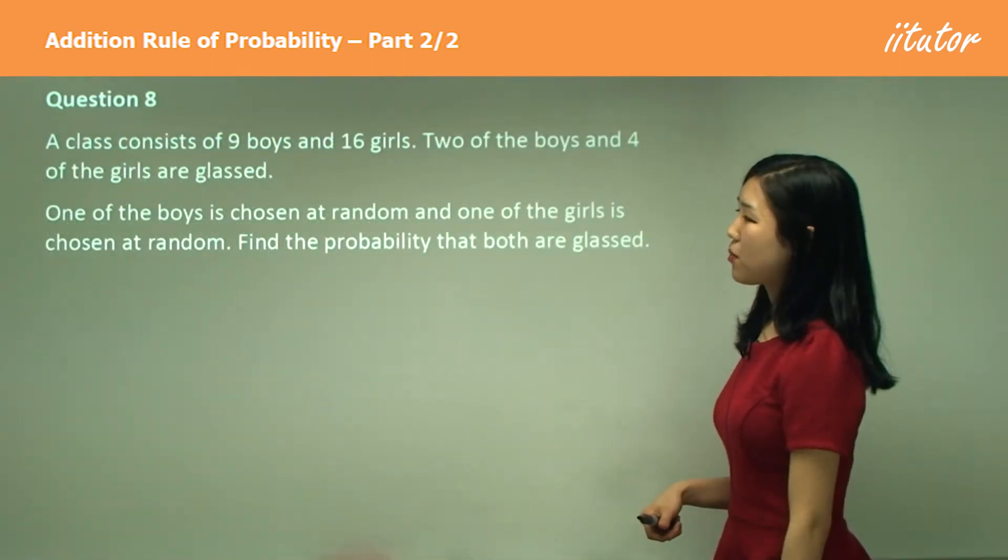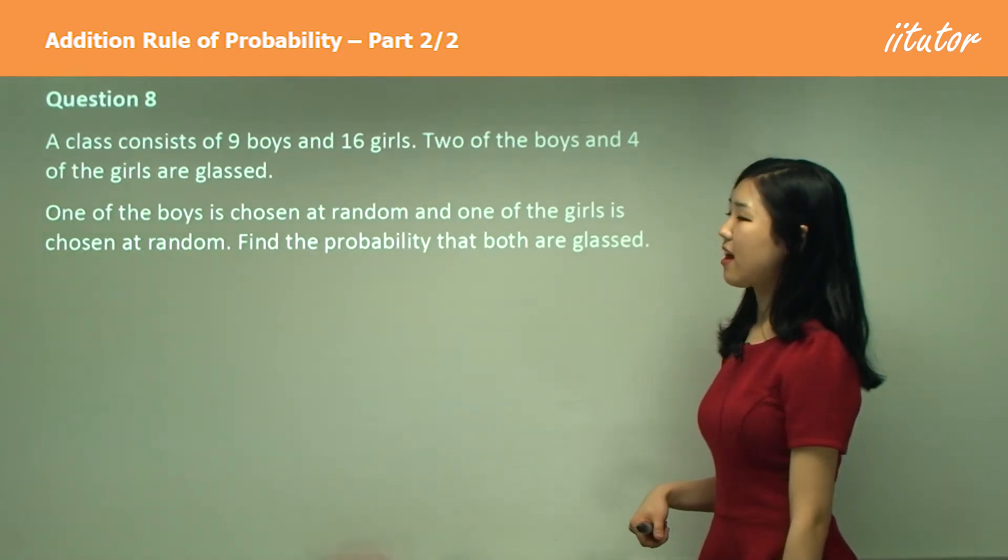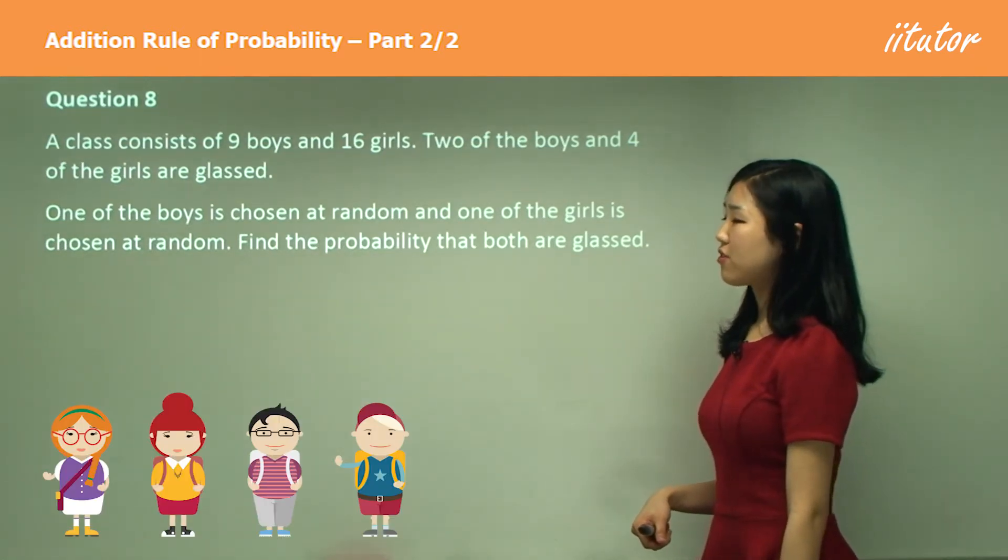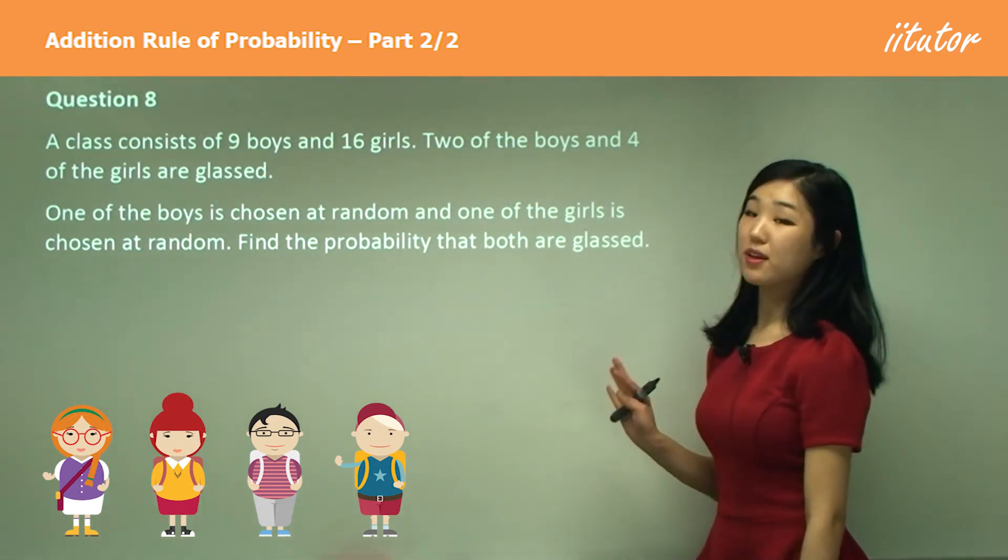A class consists of nine boys and 16 girls. Two of the boys and four of the girls are glassed. One of the boys is chosen at random and one of the girls is chosen at random. Find the probability that both of them are glassed.